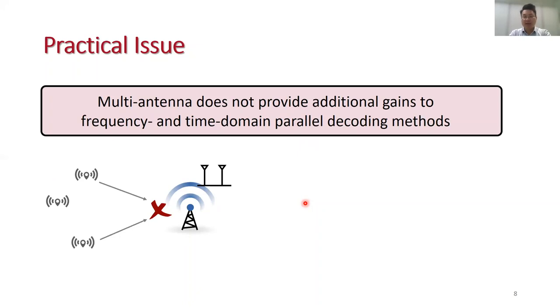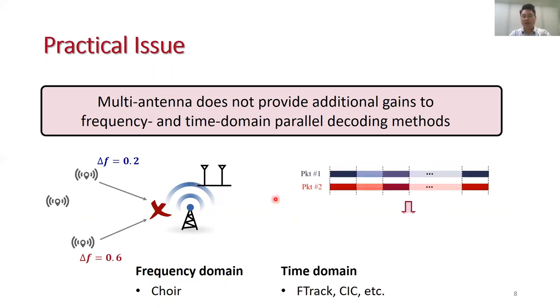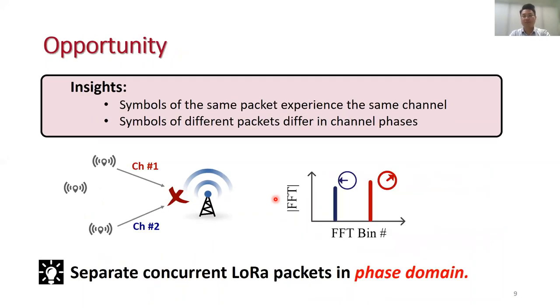The reason is that as the frequency domain fingerprint is determined by the hardware of IoT sensors, all antennas will extract the same frequency features. Similarly, if one antenna receives two packets with well-aligned symbol edges, it is not likely that a second antenna will receive the packets with a misaligned time offset. A key insight of our research is that different packets will be received with different channels. For example, these two packets will go through different channels to arrive at this gateway. So basically, we can expect to extract the phase features of received symbols and then use the phase features to separate symbols to different packets.